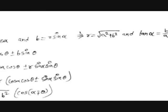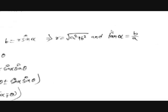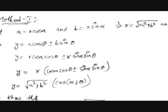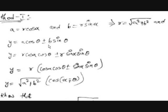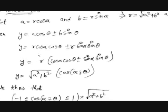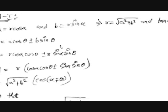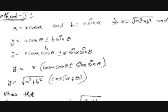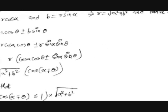We can also find tanα = b/a, though it is not essential here. Substituting a = r·cosα and b = r·sinα into y = a·cosθ ± b·sinθ, we get y = r·cosα·cosθ ± r·sinα·sinθ. Taking r common: y = r·(cosα·cosθ ± sinα·sinθ).